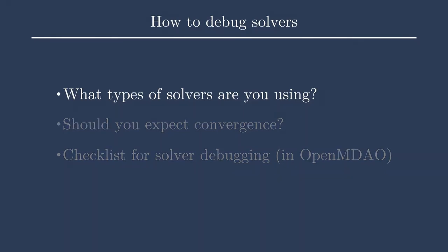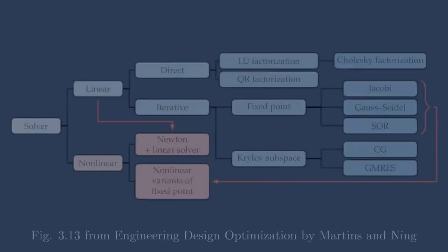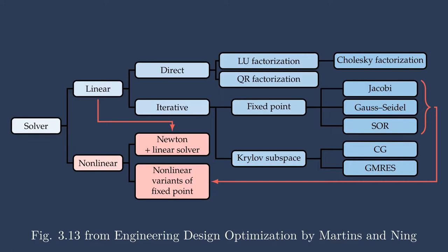Let's discuss what types of solvers you're using within your model. This figure comes from Chapter 3 in the Engineering Design Optimization book by Martin Zindane, previously examined in the Types of Solvers and When to Use Them lecture. For fixed-point iteration methods like Jacobi or Gauss-Seidel, you might use a relaxation method such as Aitken relaxation to help reach convergence. If you're using a Newton solver, you can try adding a line search — either a bounds-enforcing or an Armijo-Goldstein line search — or set solve_subsystems to true to do one iteration of Gauss-Seidel first before attempting the Newton solve.